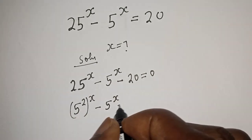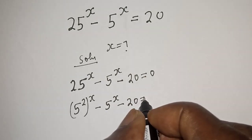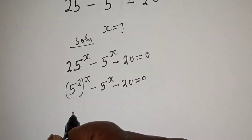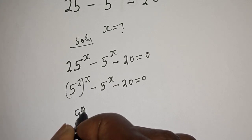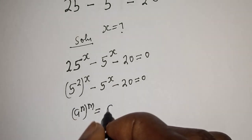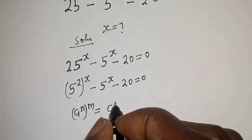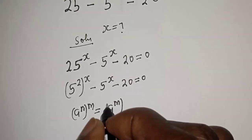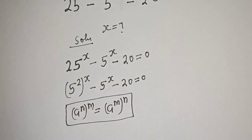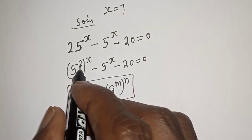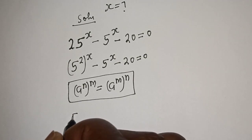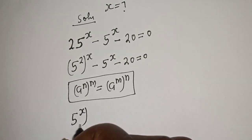So we have 5 squared raised to power s minus 5 raised to power s minus 20 is equal to zero. Take note that a raised to power n, to the power of m, is equal to a raised to power m to the power of n. Then 5 squared raised to power s can be written as 5 raised to power s, squared.